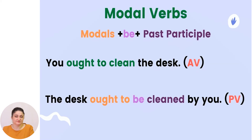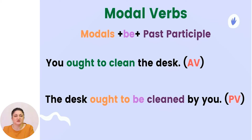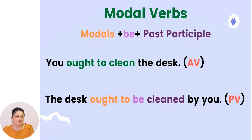Modal verbs. When you want to change a modal verb, you have to use a modal — it can be 'can', 'may', 'shall', 'would', 'could', and so on — plus 'be', plus the past participle. For example: 'You ought to clean the desk.' becomes 'The desk ought to be cleaned by you.'